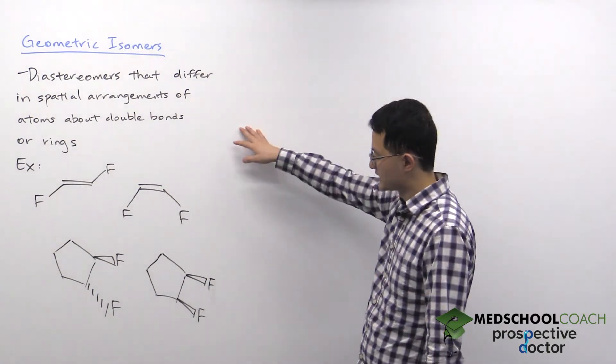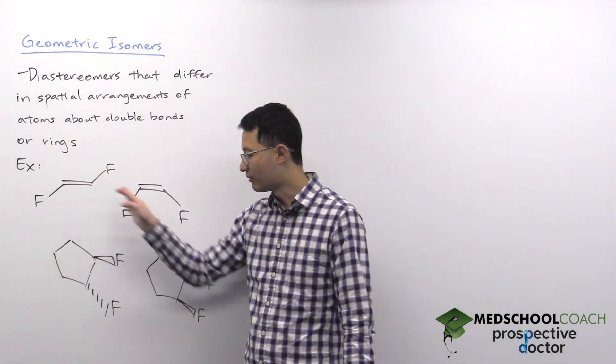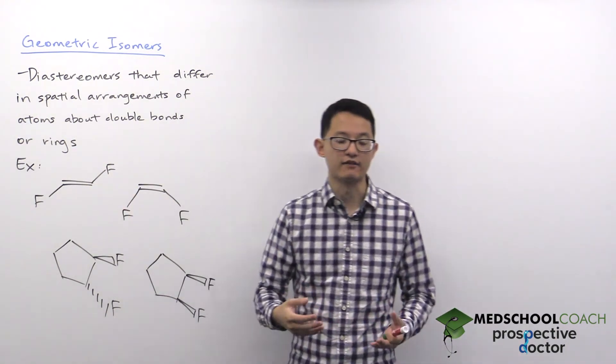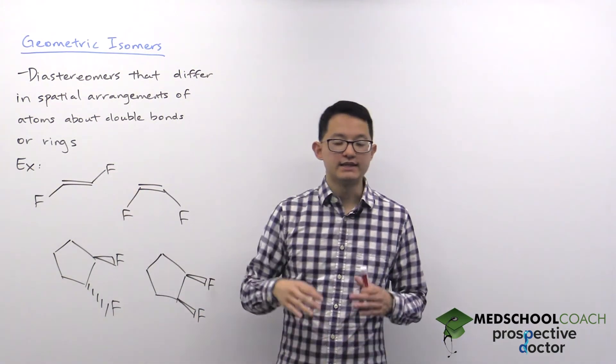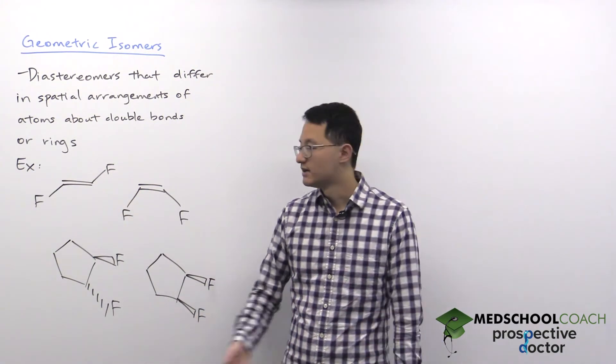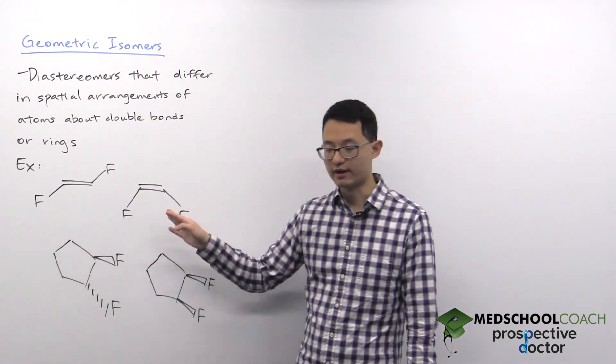So here I've got a couple examples where you can see you've got a double bond in these two molecules, but you can see how the fluorine residues are oriented differently. These differences are permanent because there is no free rotation across double bonds.